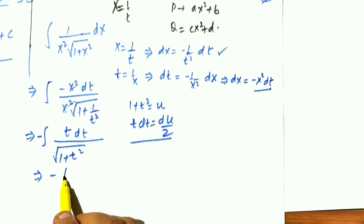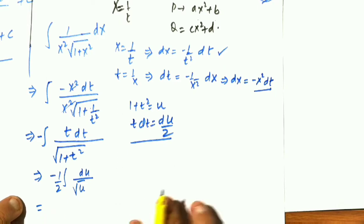So I will replace t dt by du by 2. So my t dt is minus du by 2, and this is square root of u.